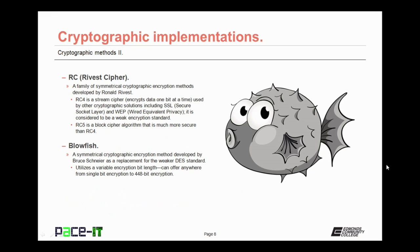Then there is RC, which stands for the Rivest cipher. It's a family of symmetrical cryptographic encryption methods developed by Ronald Rivest. RC4 is a stream cipher, so it encrypts one bit at a time, and is used by other cryptographic solutions including SSL — Secure Socket Layer — and WEP — Wired Equivalent Privacy. It is considered to be a weak encryption standard and should no longer be used.